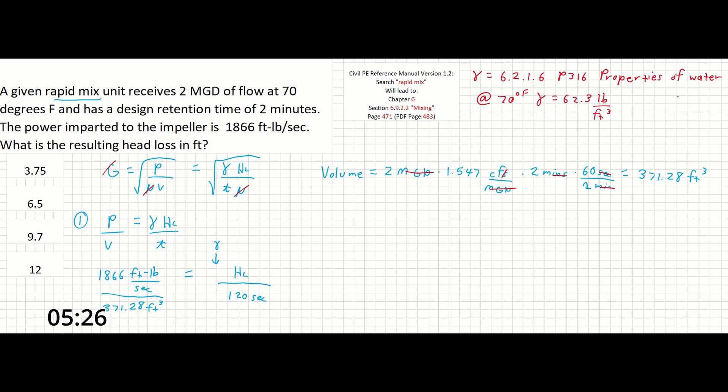I should note that this table also provides the viscosity if you had ended up needing that for this problem as well. So plugging that into the equation, all we have to do after this is solve for the head loss. If we multiply the time over and then divide out the gamma to isolate HL, we can see that this equals just about 9.68 feet. And our closest answer over here is 9.7.